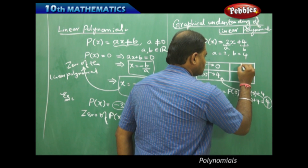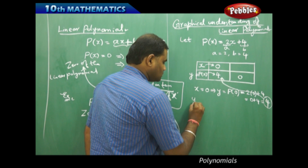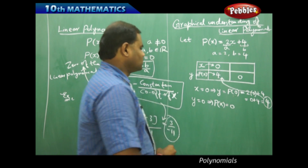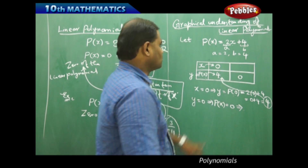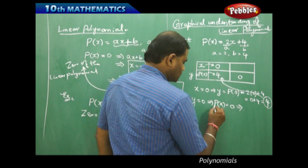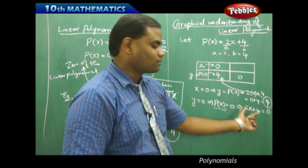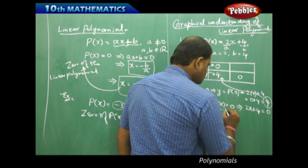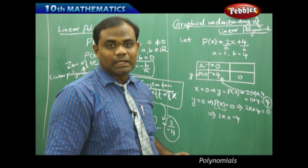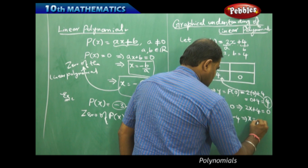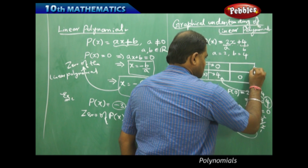Similarly, when the value of y is 0, I want to find the value of x. Taking y equal to 0 implies P of x equal to 0, which means 2x plus 4 equals 0. Simplifying, 2x equals minus 4, and therefore x equals minus 4 over 2, which gives x equals minus 2.